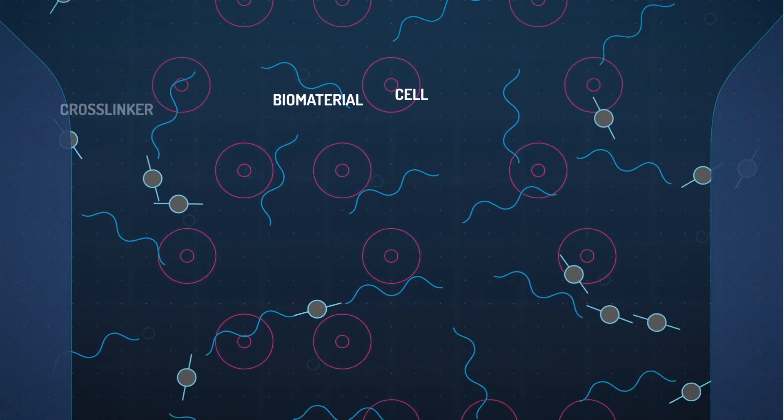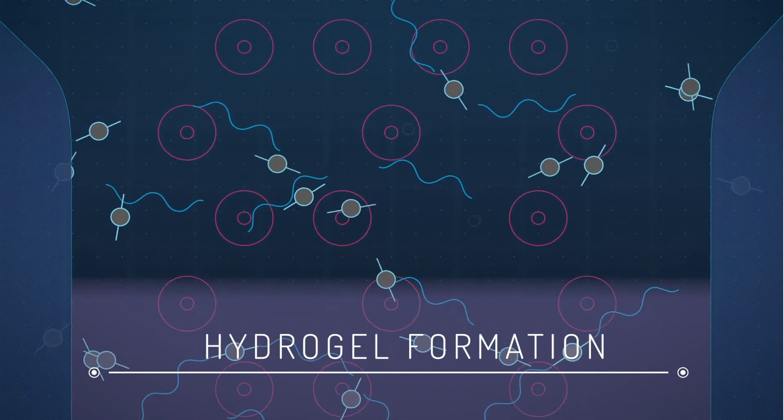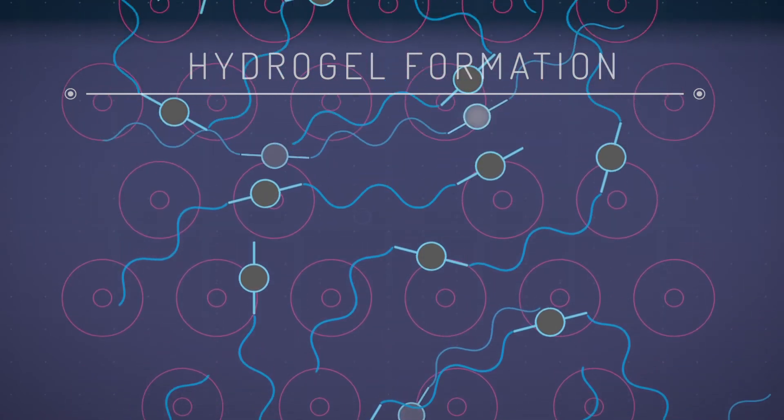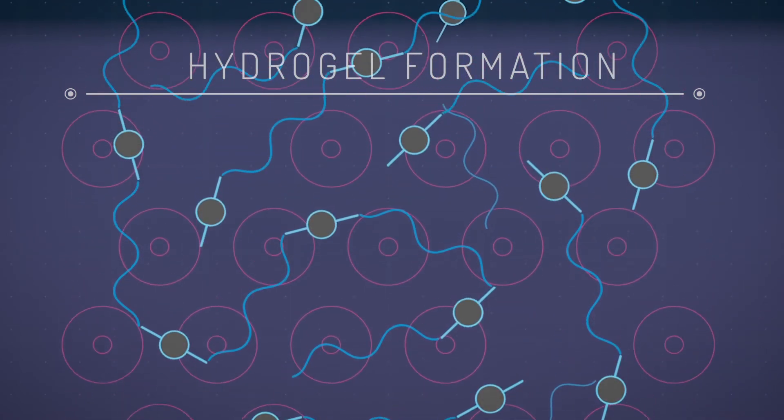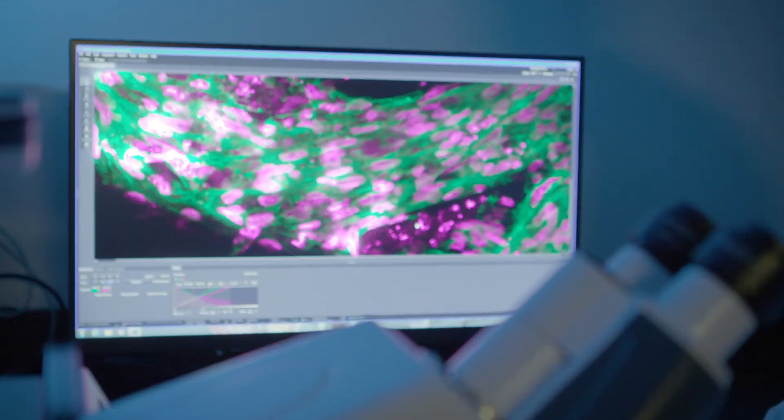A cross-linking component in the sheath fluid transforms the biomaterial precursors into hydrogel. This on-printhead cross-linking enables the printing of bio-inks with low biomaterial concentrations and high cell densities, an important capability for creating physiologically relevant soft tissue structures.